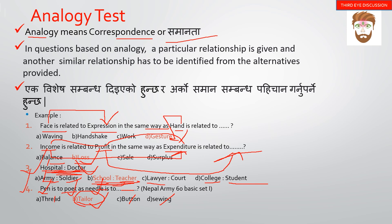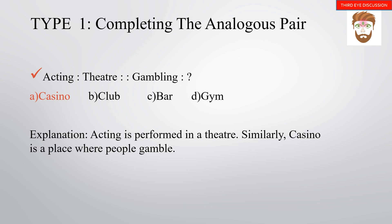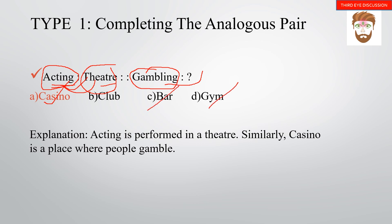Type 1 is completing the analogous pair. For example: acting is to theater, gambling is to what? Acting is performed in a theatre. Similarly, a casino is the place where we gamble, so the answer is casino.